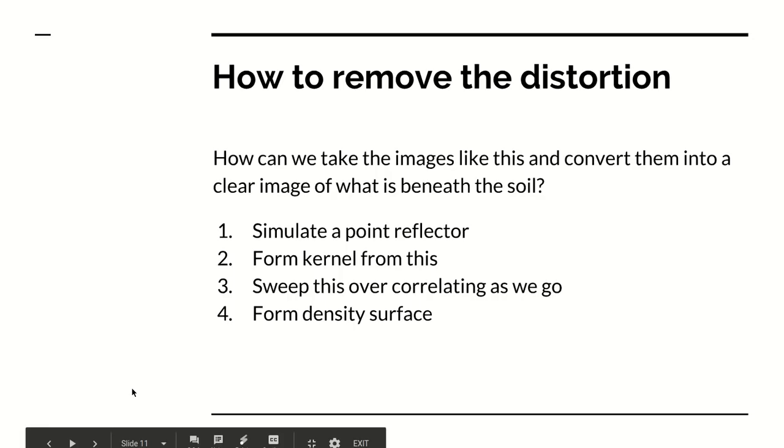How can you remove this? Well the technique that Dr. Sen Godin and I developed goes through four steps. You first simulate what a pure point reflector would do. You form a 3D kernel from this. By a 3D kernel I mean a three-dimensional array of data which corresponds to the strength of reflection you would have got from this ideal reflector.